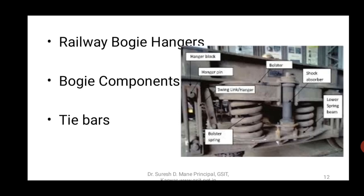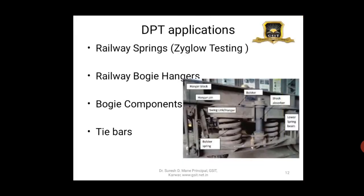Almost all components are tested — including bearings. The railway coach bearing is almost one foot in diameter and is checked under the Zyglo test, where a fluorescent dye is used and checked under ultraviolet lamp. Very minute cracks are also detected. These spherical roller bearings are cleaned and tested using the Zyglo test — the advanced form of dye penetrant test.